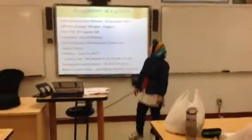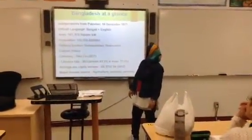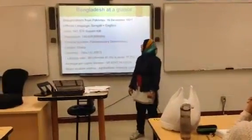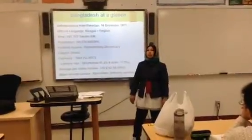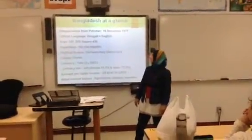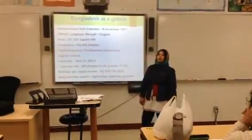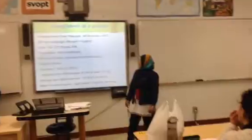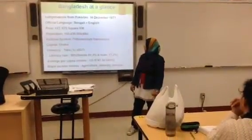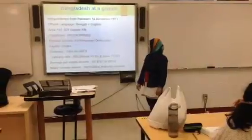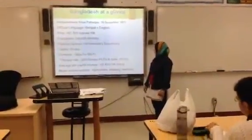The total area is 147,570 square kilometres and the population is 160 million. It is the world's eighth most populous country. The political system is a parliamentary democracy. Our current currency is Taka. Our literacy rate is 65% — female is 81.3% and male is 77.3%. Per capita income was 747 US dollars. Our major income sources are agriculture, industry, and services.